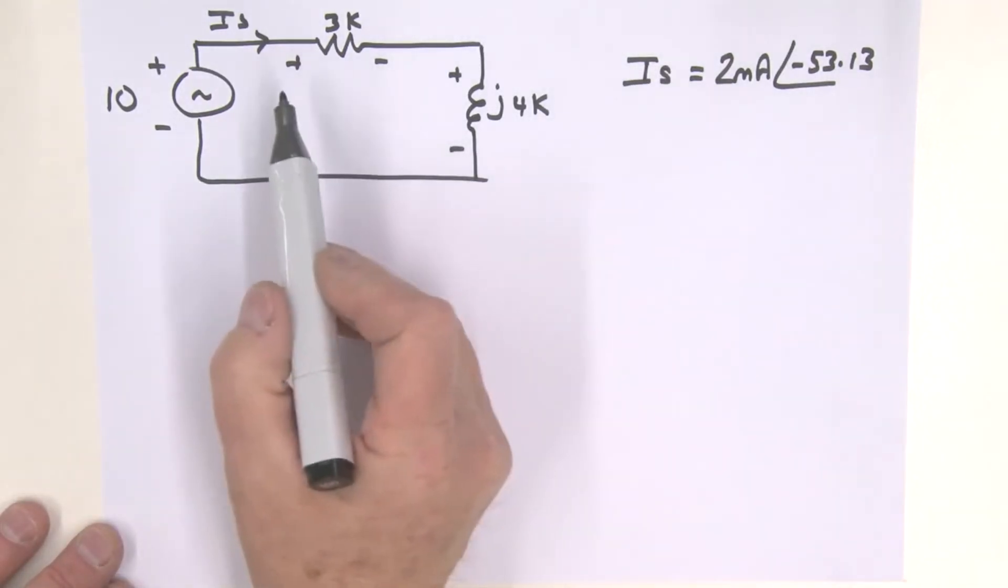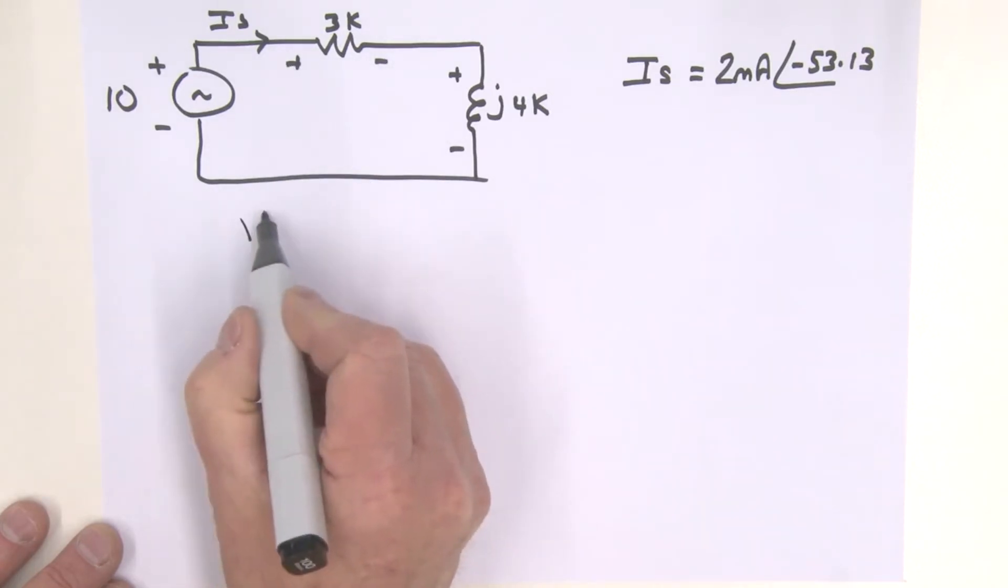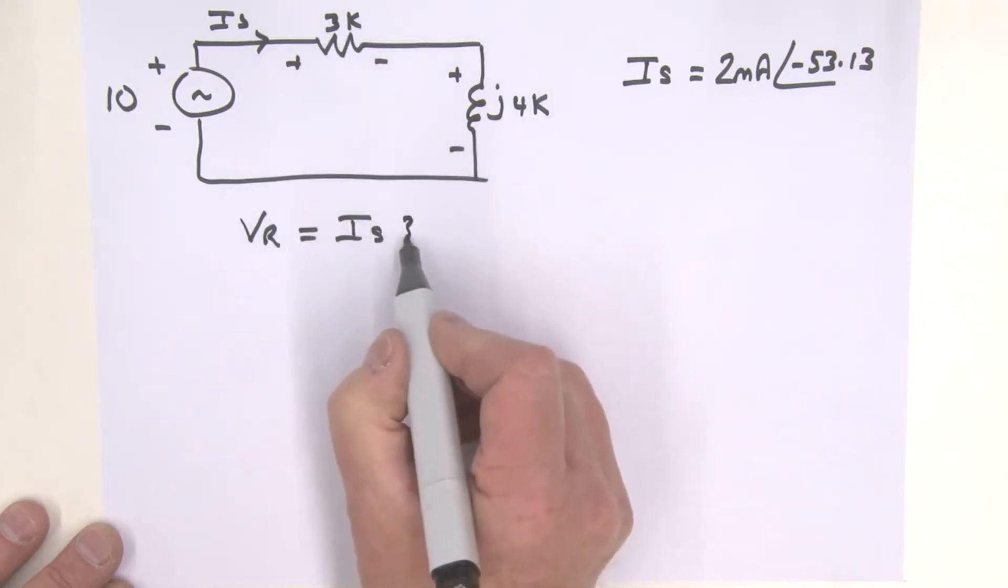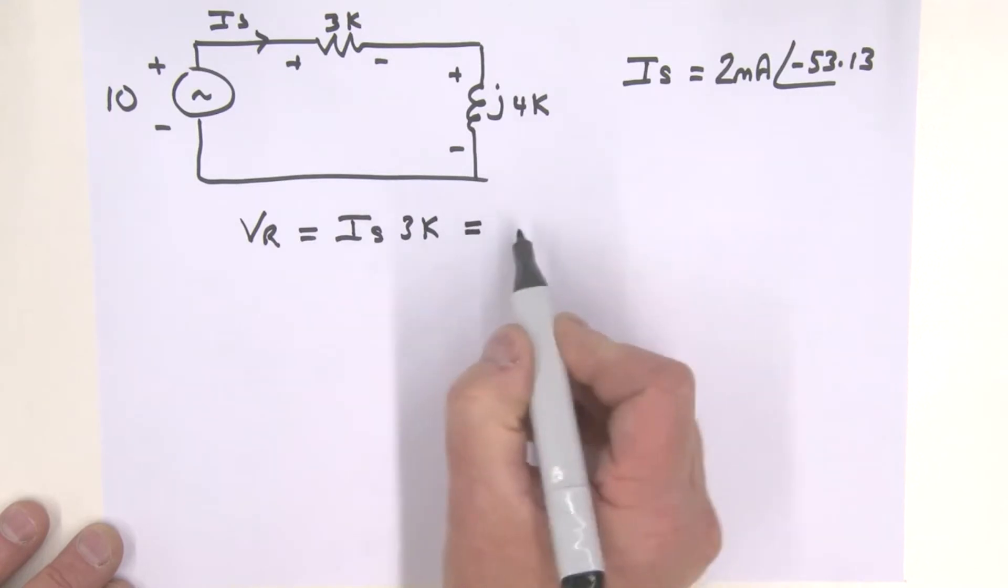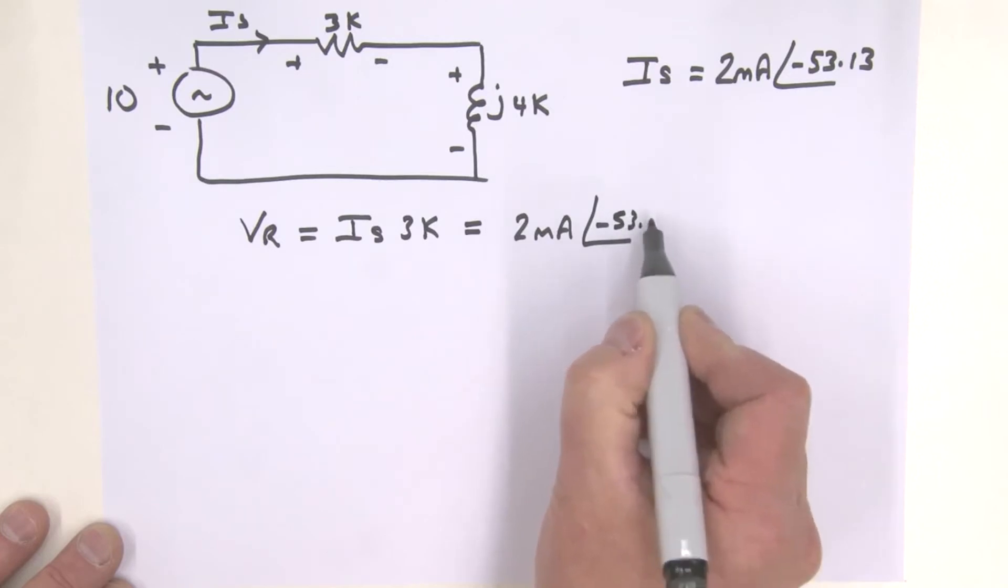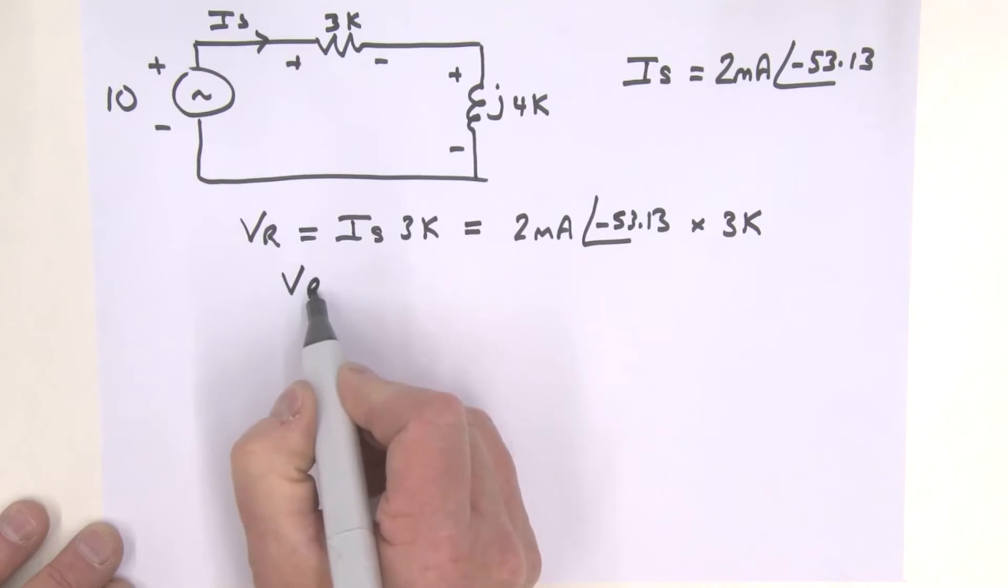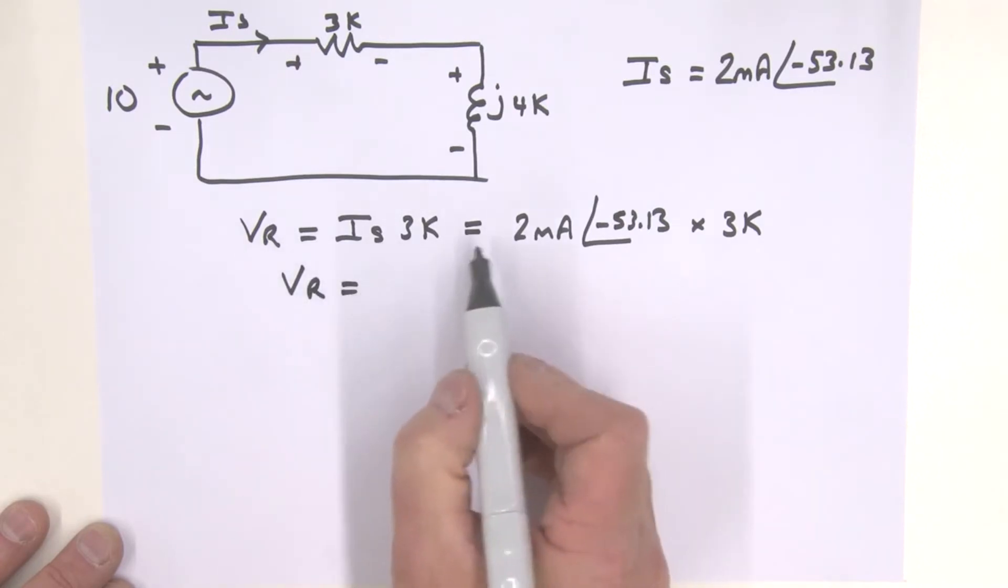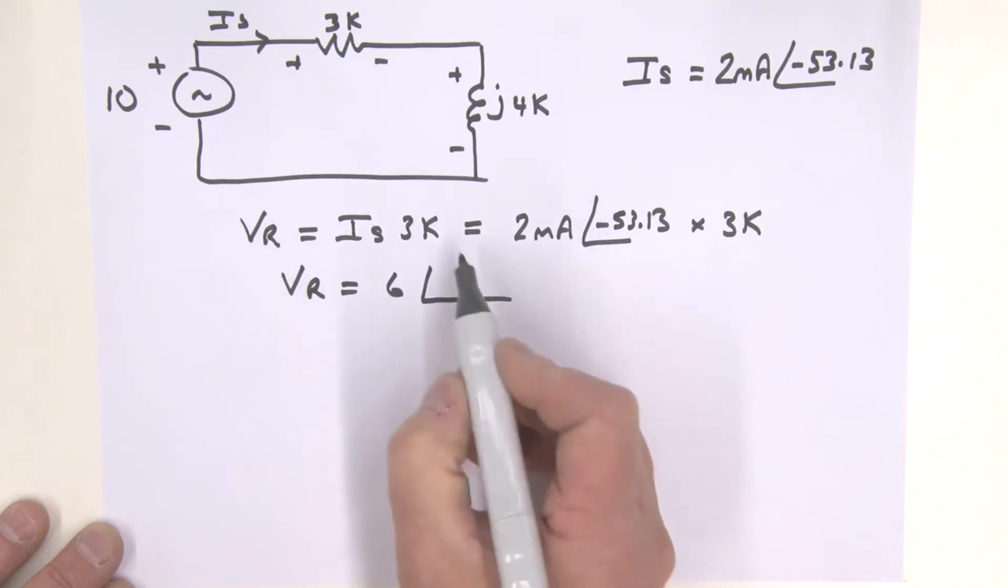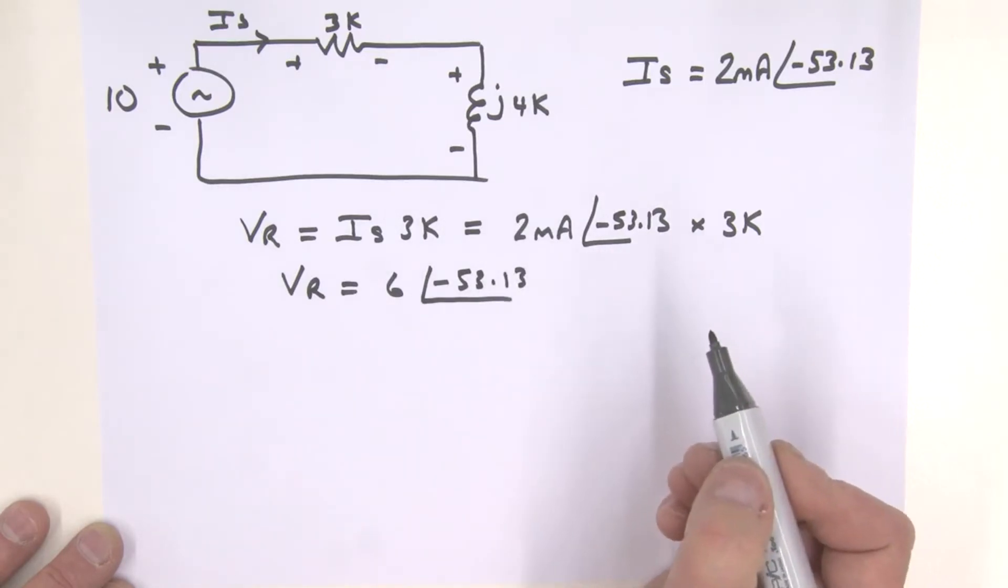Having found IS, we can now evaluate the voltage across the resistor. We're going to call that VR. So VR is simply going to be equal to that current IS multiplied by that 3K, and that of course is equal to 2 milliamps angle minus 53.13 multiplied by 3K. So that gives us a voltage across that resistor which is 2 times 3, that's 6 volts at an angle of minus 53.13 degrees.